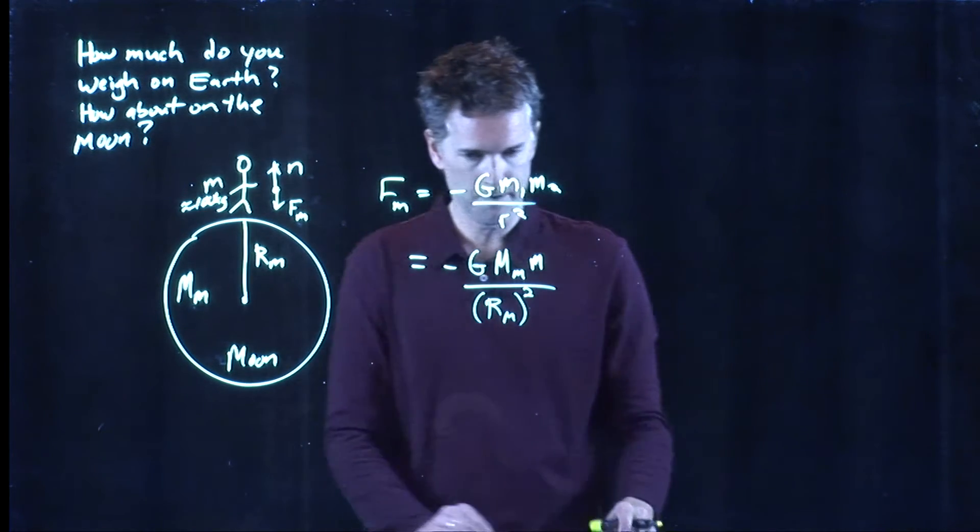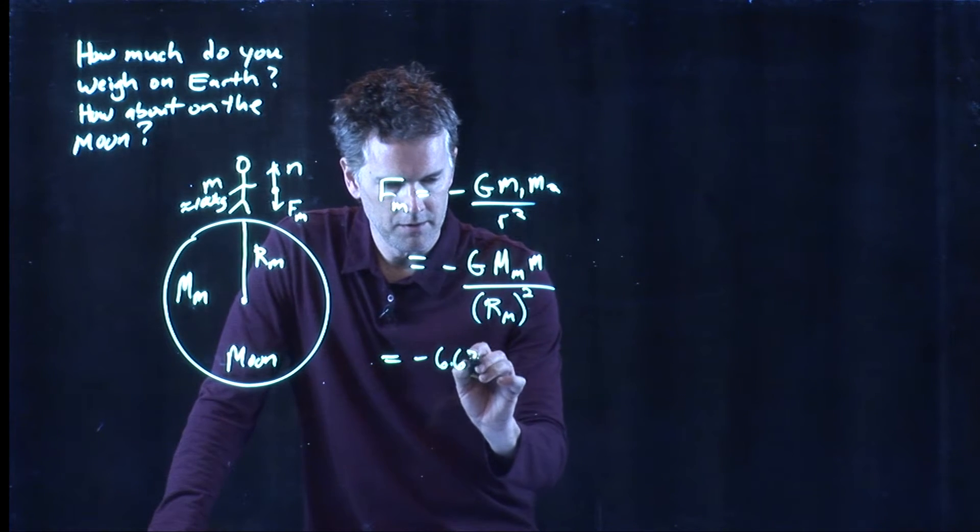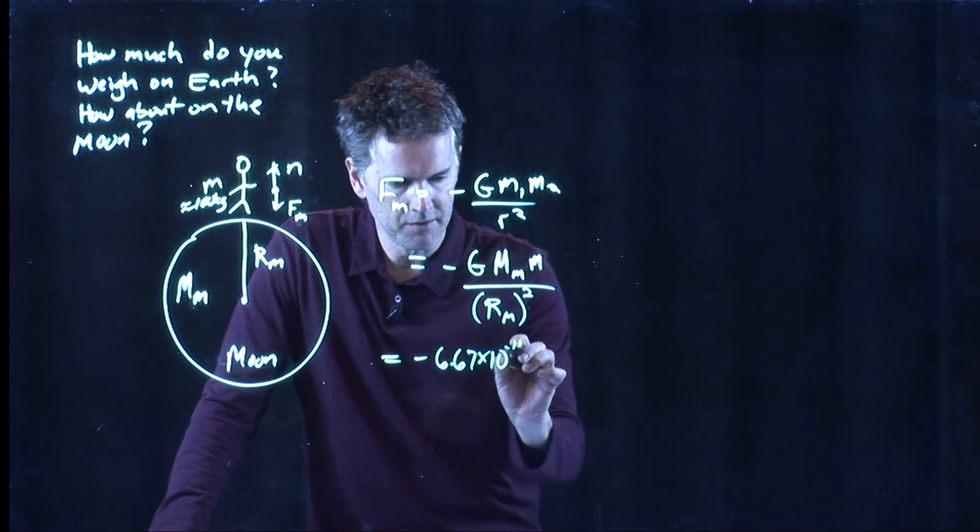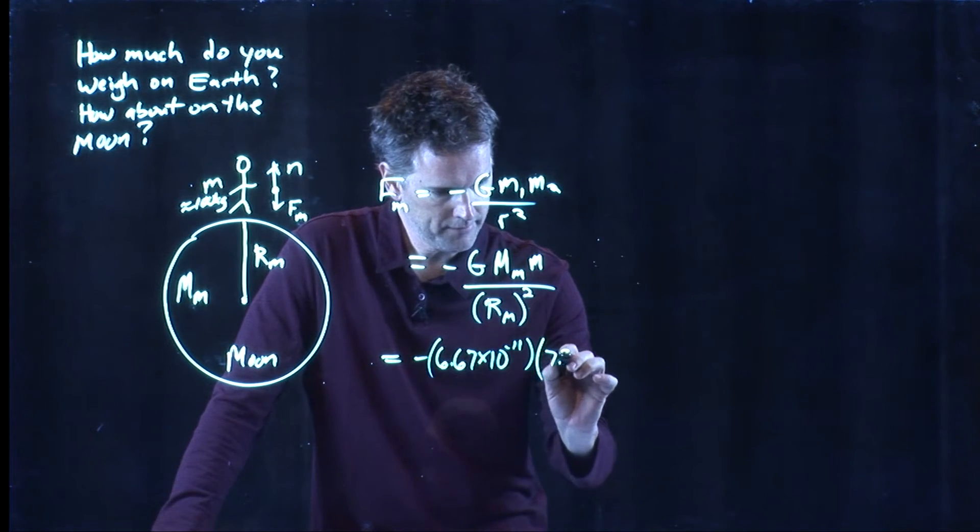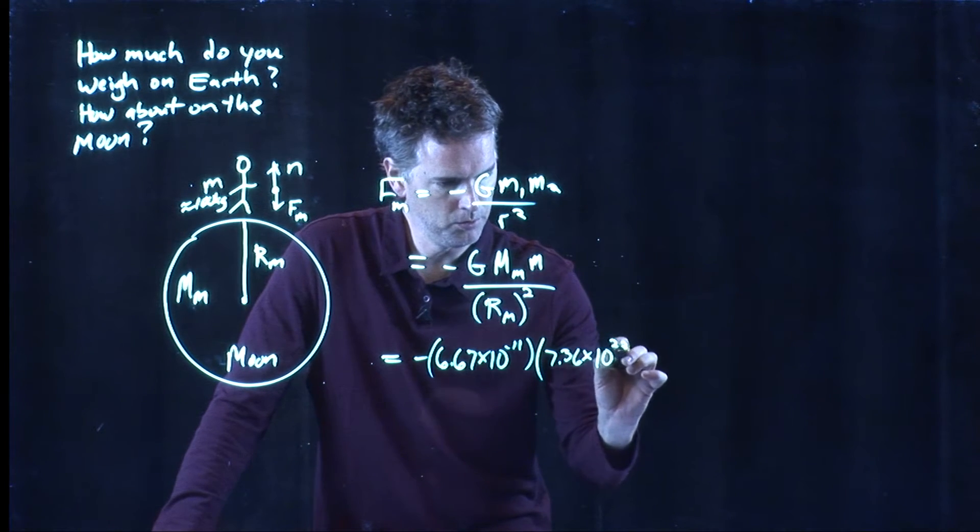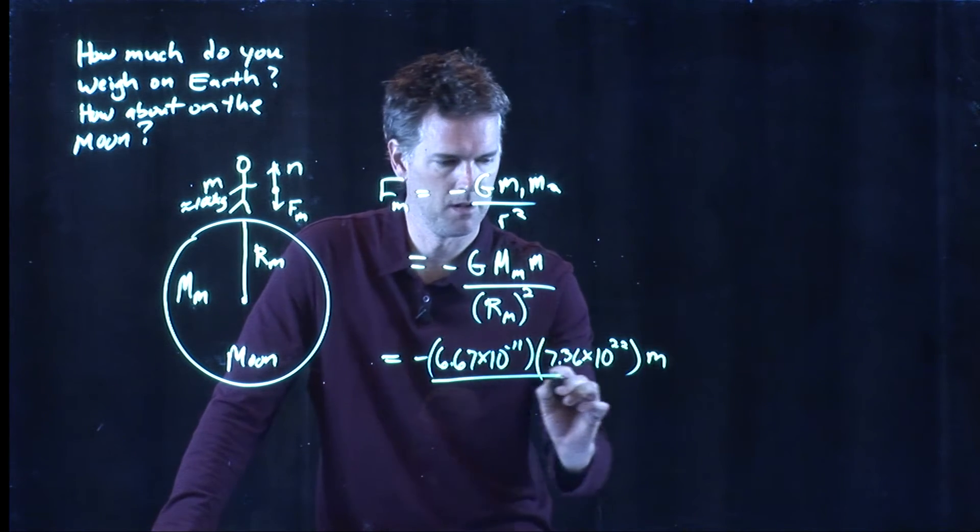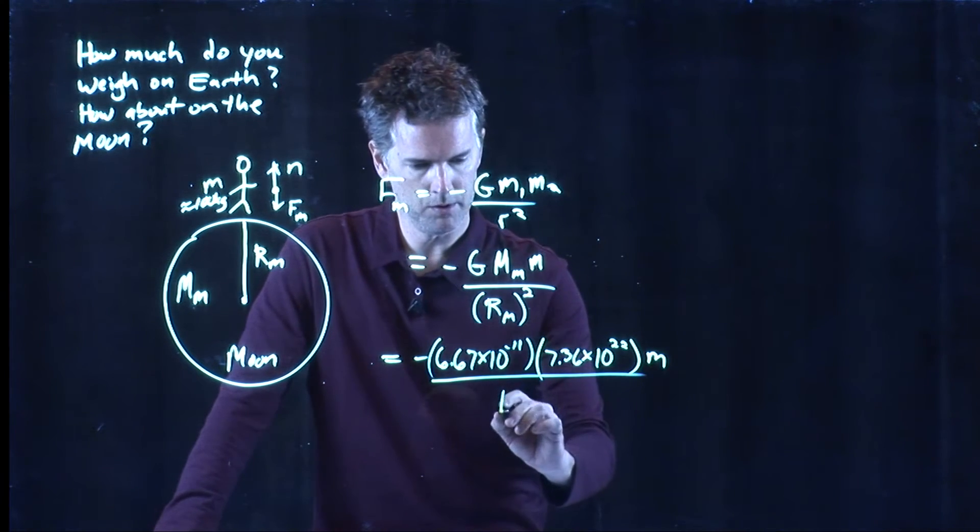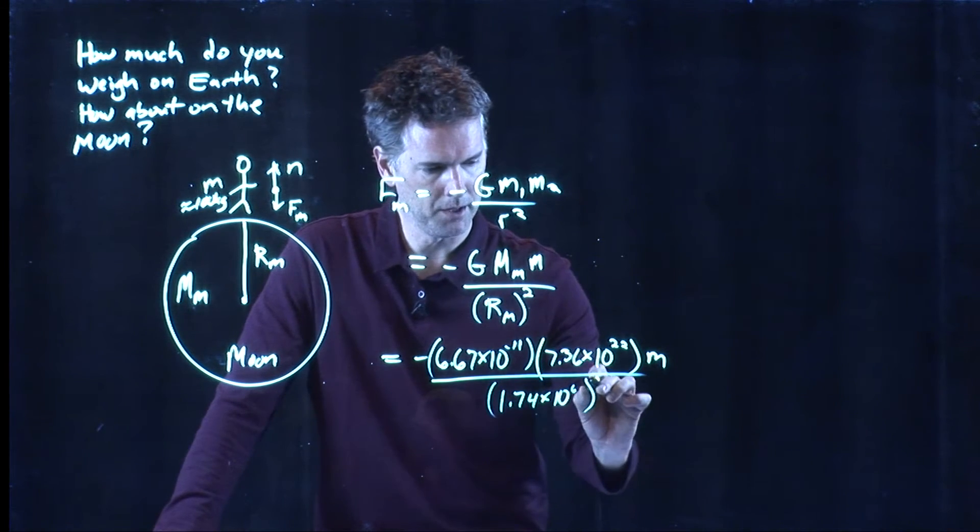I have them right here for you. This is still 6.67 times 10 to the minus 11. The mass of the Moon is 7.36 times 10 to the 22 kilograms. We're going to stay in SI units here.